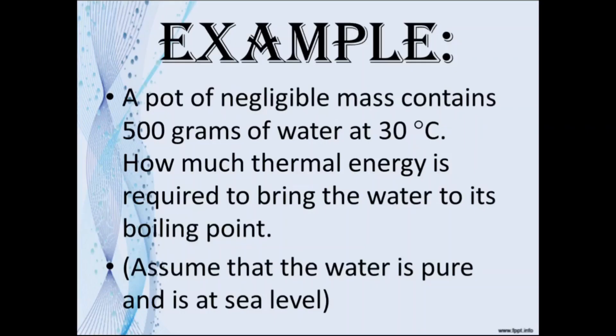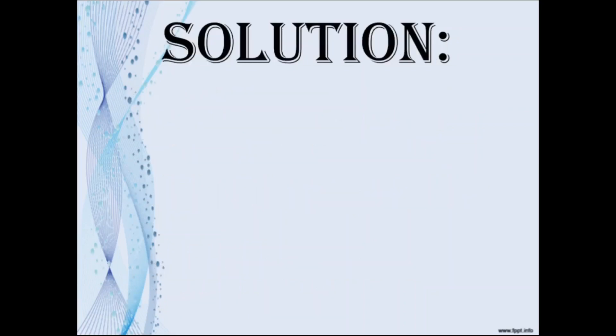Let's look at an example. A pot of negligible mass contains 500 grams of water at 30 degrees Celsius. How much thermal energy is required to bring the pot of water to its boiling point? Assume that the water is pure and is at sea level. The mass is 500 grams, which we have to convert to kilograms. Dividing by 1000 you get 0.5 kilograms.